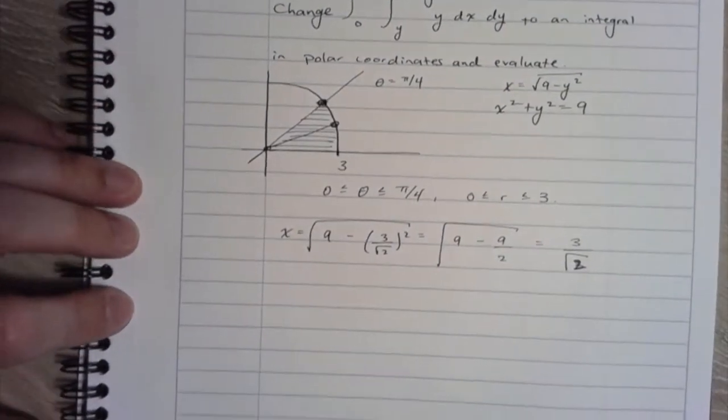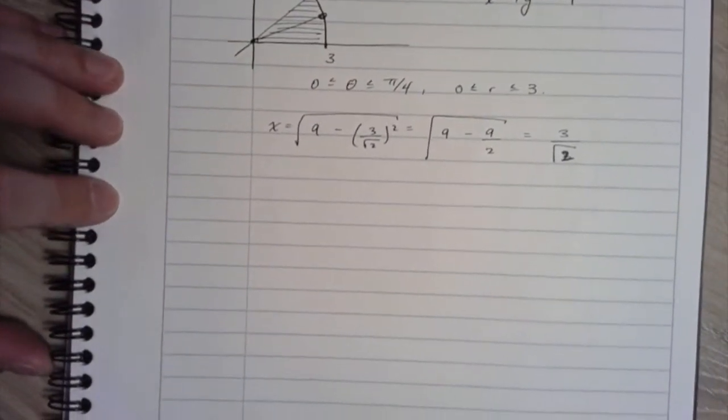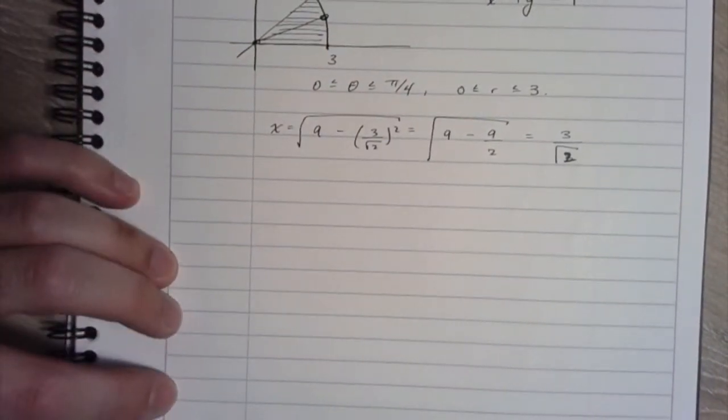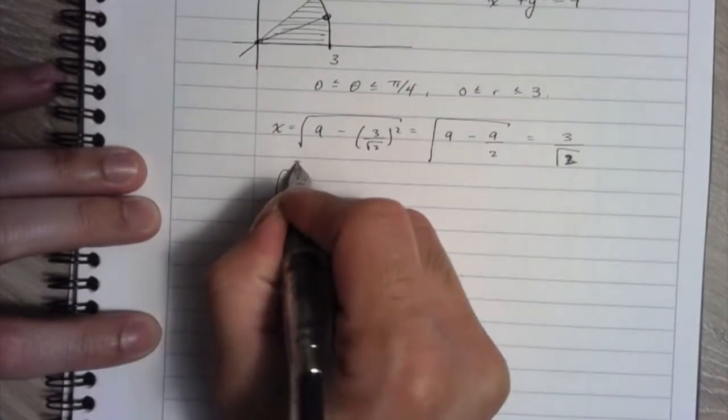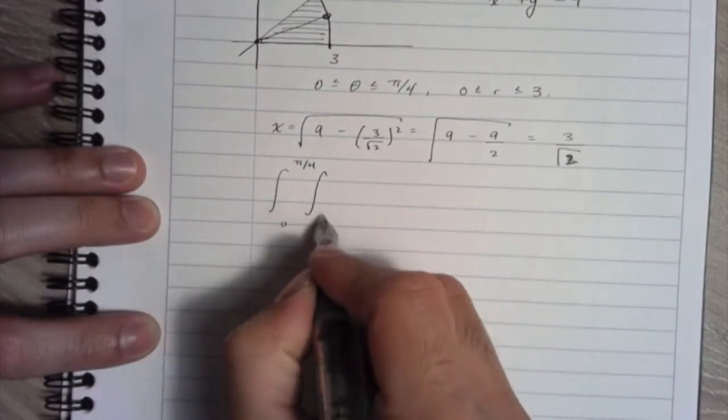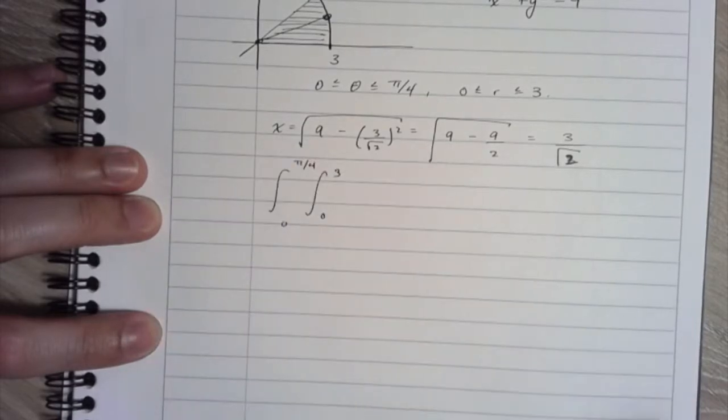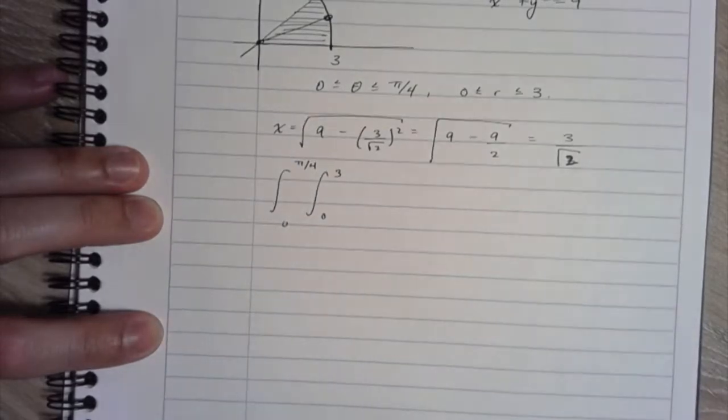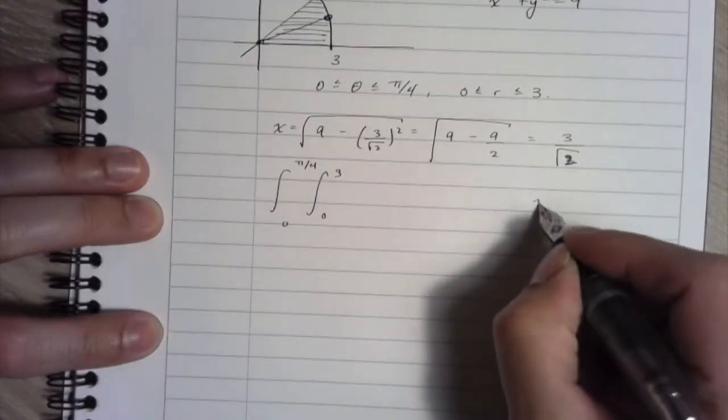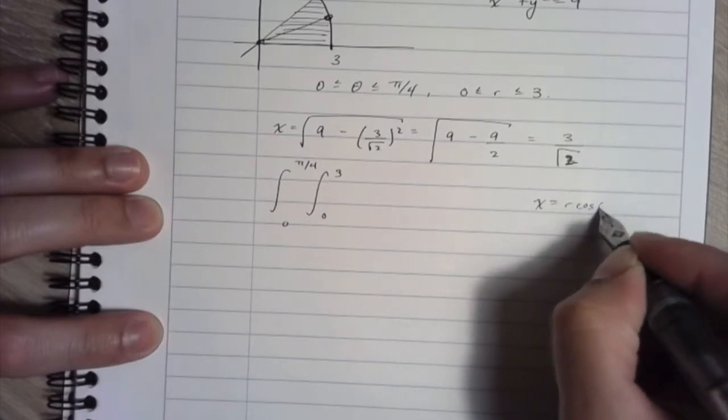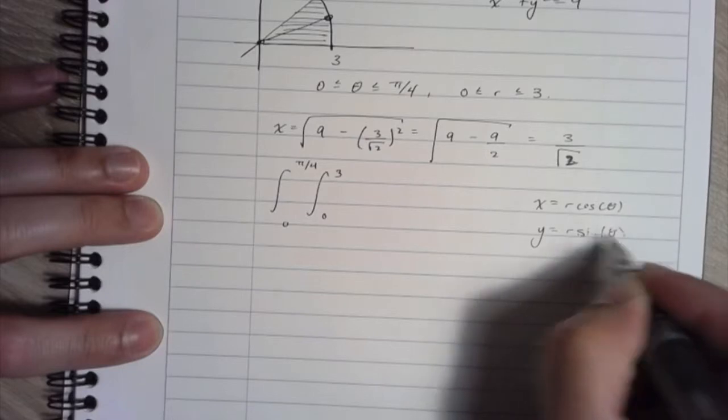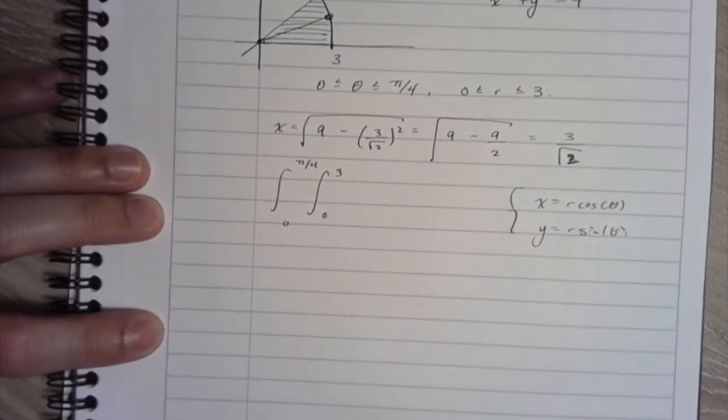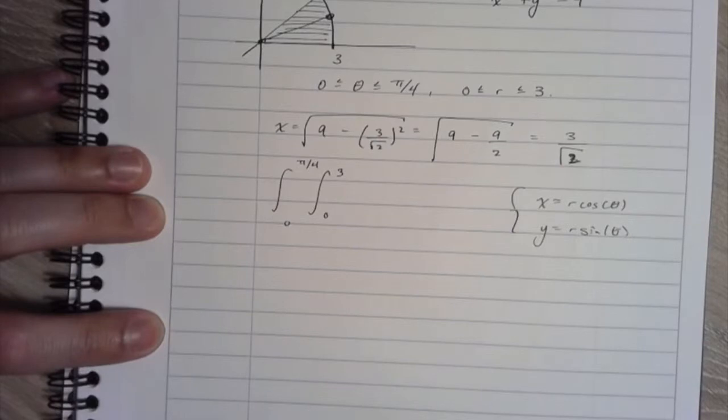So that we have our bounds for theta and r, we can translate our integral. So let's write it. Theta is going from 0 to pi over 4, r is going from 0 to 3. We have to use our change of variables. So let's remind ourselves what those are. All right, so x is r cosine theta, y is r sine theta.